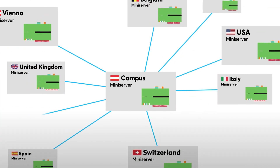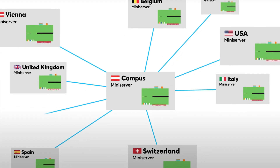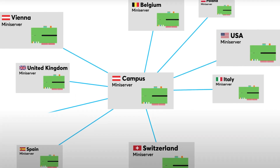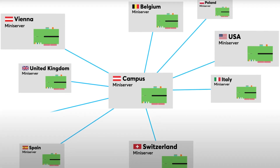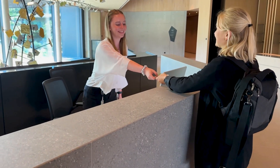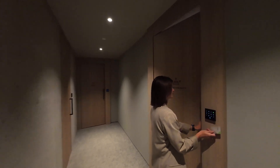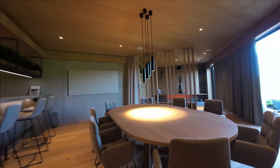Trusts enable users, their credentials, and access permissions to be shared across different mini-servers. Switching between these mini-servers becomes even more convenient with the new Config, as you no longer need to enter a password to switch. The prerequisite is that the respective user also has authorization for visualization in the Loxone app of the respective Trust mini-server. One use case here is at the Loxone campus, for example, where you can access the mini-servers in the hotel rooms even faster and easier from the reception.